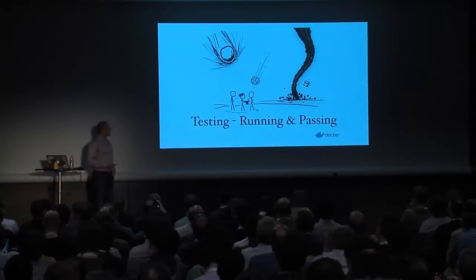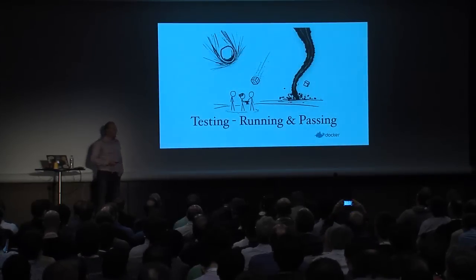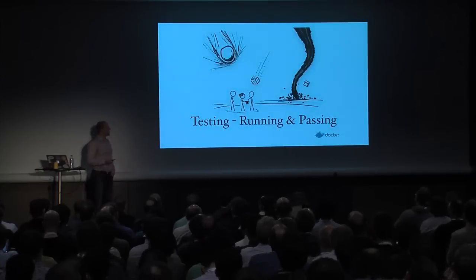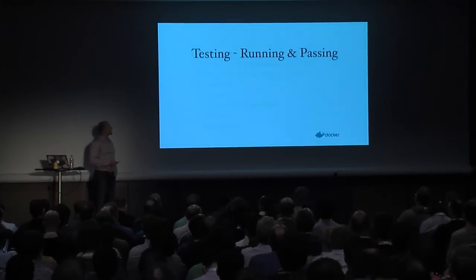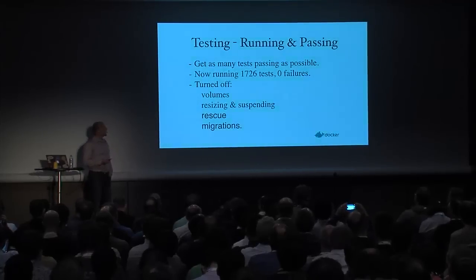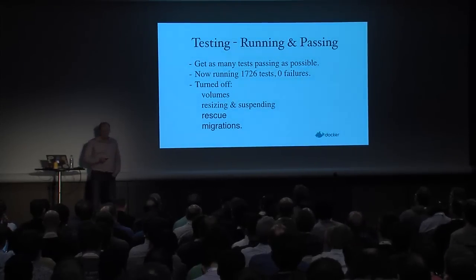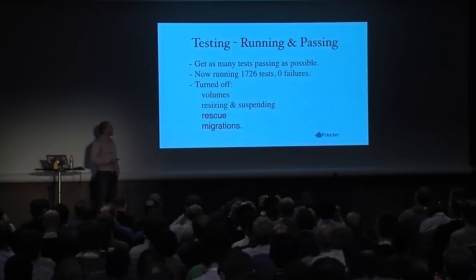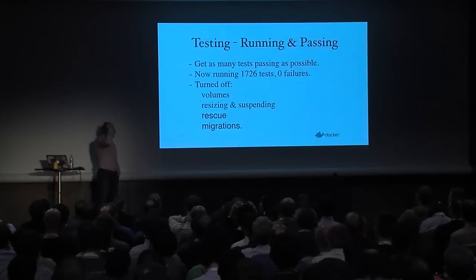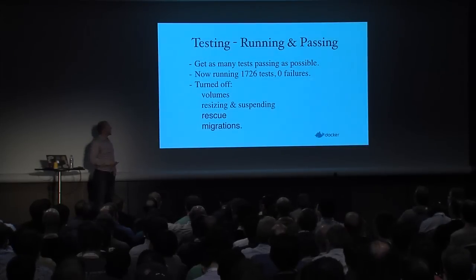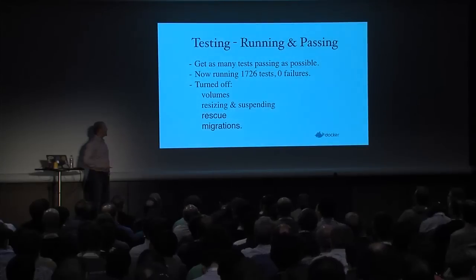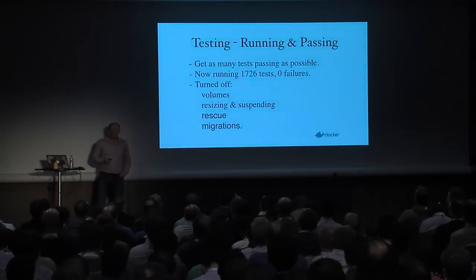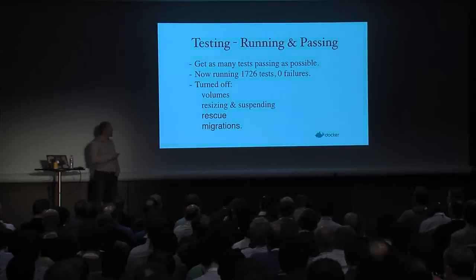My goal really was to get the continuous integration testing going again because we had problems with that — it was pulled out for that reason. We want to get as many tests passing as possible. The first step was to look at all the bugs that were generally in the Nova Docker driver. From our efforts, we now have just over 1,700 Tempest tests passing. We do still have many things turned off like volume support, resizing, suspension, suspending, rescue, and migrations.